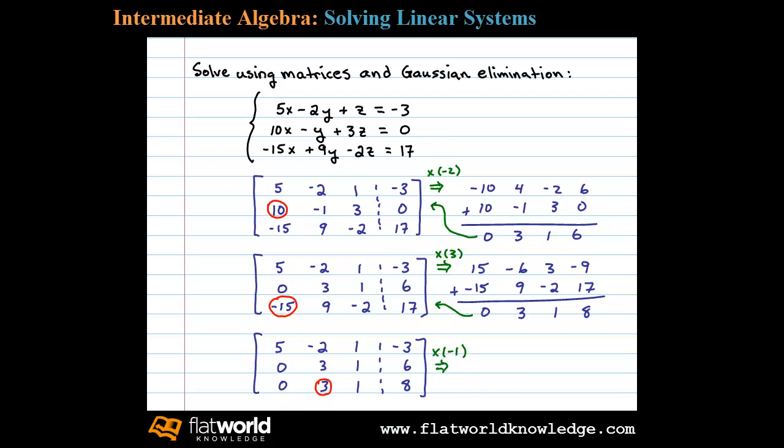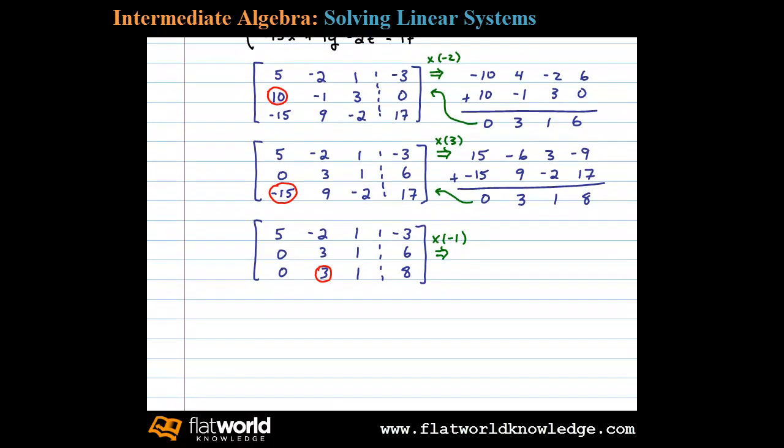That'll result in 0, negative 3, negative 1, and negative 6. Then underneath that we'll write the third row: 0, 3, 1, and 8. Now adding these together we're left with 0, 0, 0, 2, and we'll replace the third row with that.